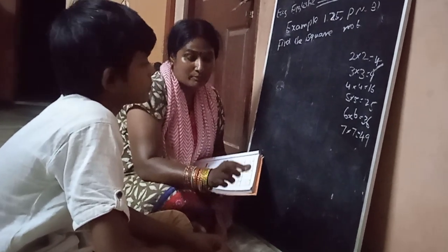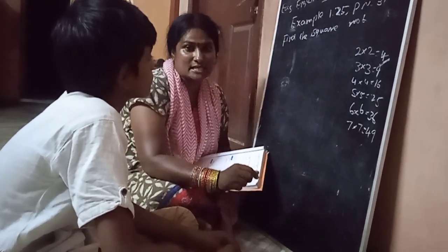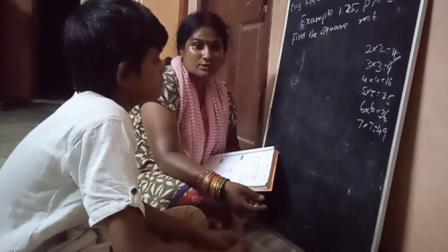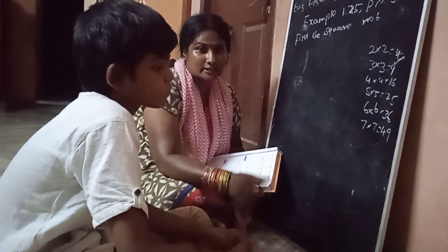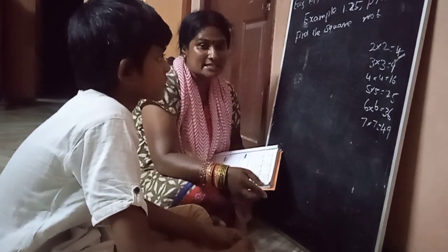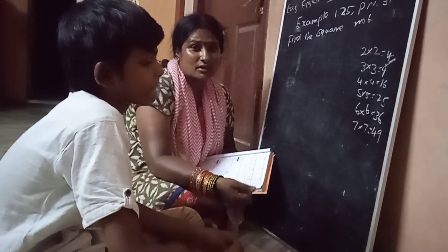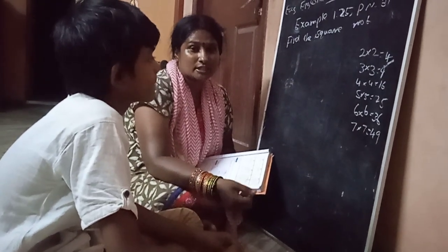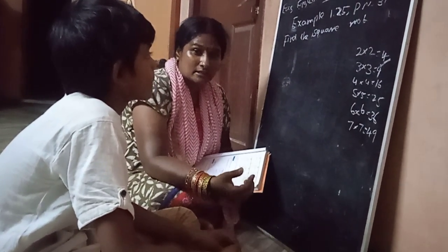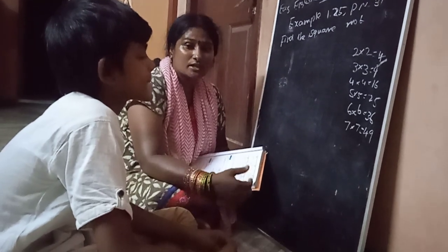Now we have a 6-digit number. We have a square number. This is a sum. This is very easy. We can learn the Math and understand the concept.